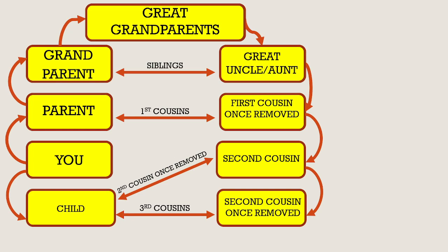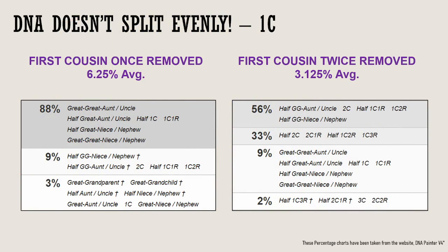Going back to the average DNA shares I showed you earlier, I've broken these down into graphs for you to understand better. There are three slides covering the first cousin, second cousin, and third cousin sections for once and twice removed. A first cousin once removed shares 6.25% DNA on average, but that only gives you an 88% chance of being a first cousin once removed — you even have a 3% chance of being a first cousin — because DNA does not split evenly. I'll roll through the next couple of slides so you can screenshot them if needed.